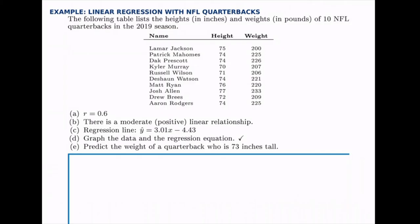Next, we can predict the weight of a quarterback who is 73 inches tall. Given a height, we can predict their weight using the regression equation. With a equal to 3.01 and plugging in 73 for x, we can predict that the weight — y-hat — for a quarterback of this height would be about 215 pounds.